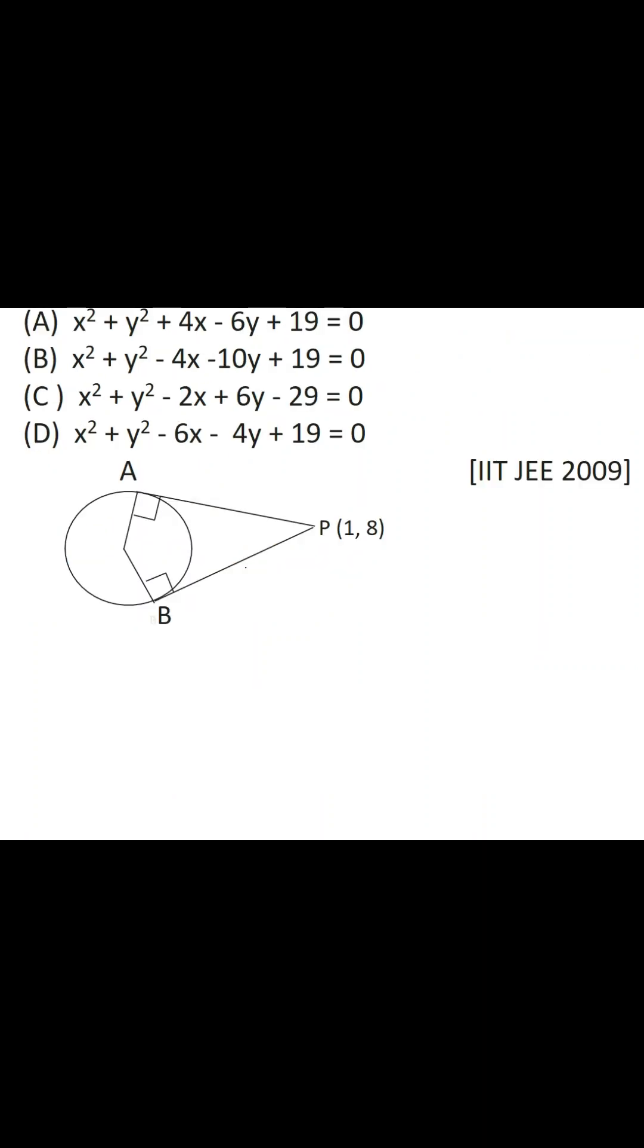Now we can see that these two angles, which the radius makes with the tangents, are 90 degrees. So the angle OAP and angle OBP, both are right angles.